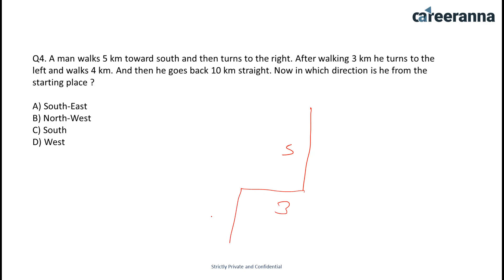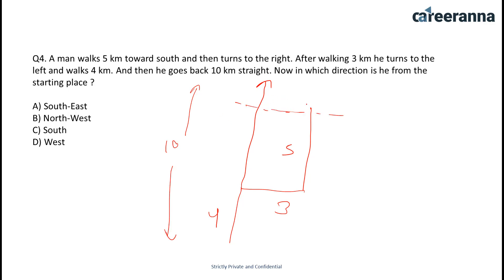He goes back, and the total becomes 10 kilometers. We can see that he is one kilometer above the initial point, so the direction would be north and west. Option B becomes our answer.